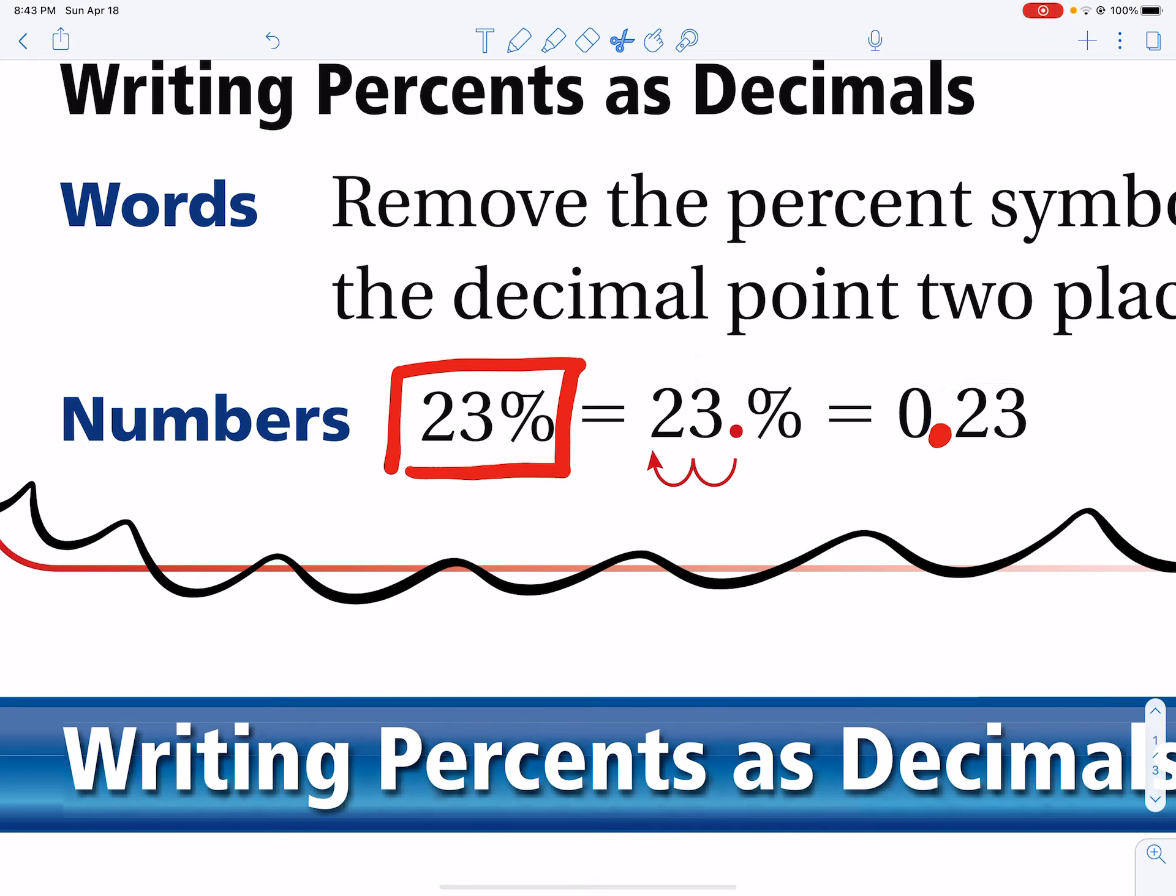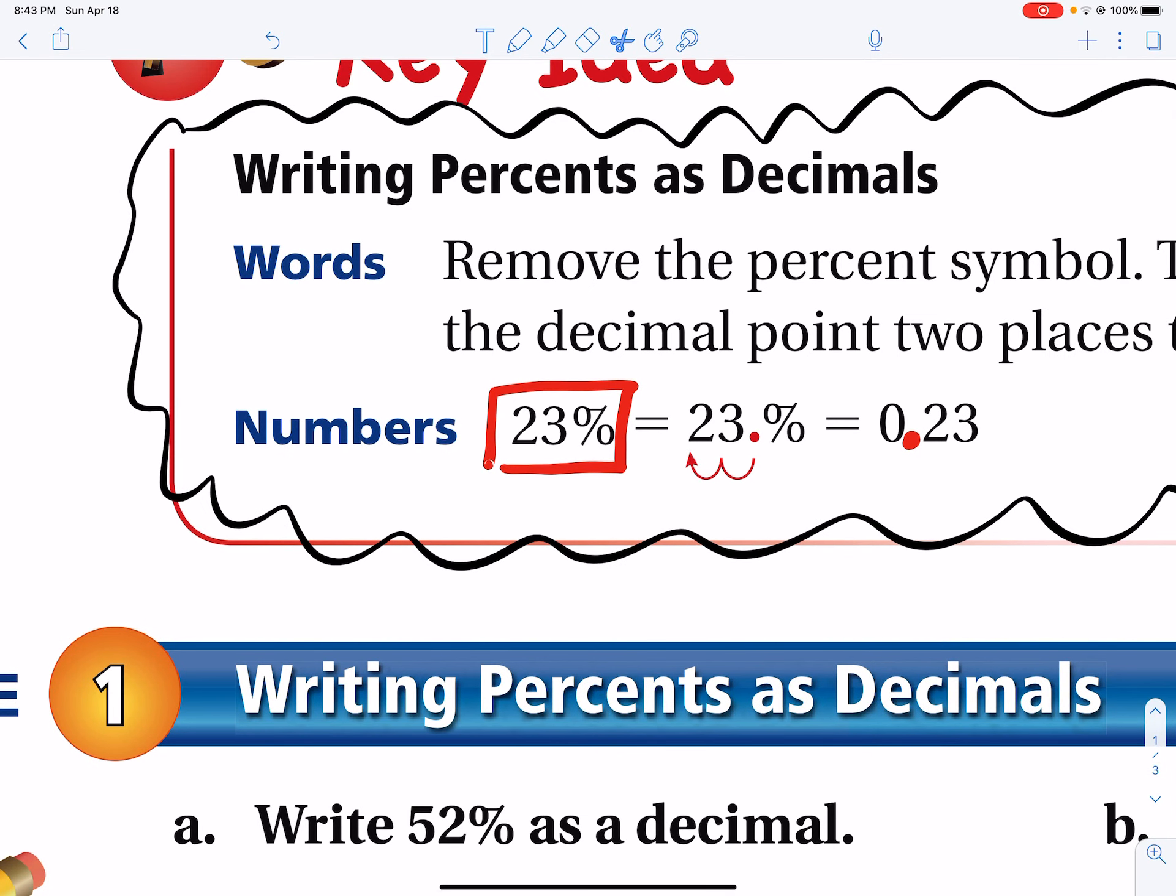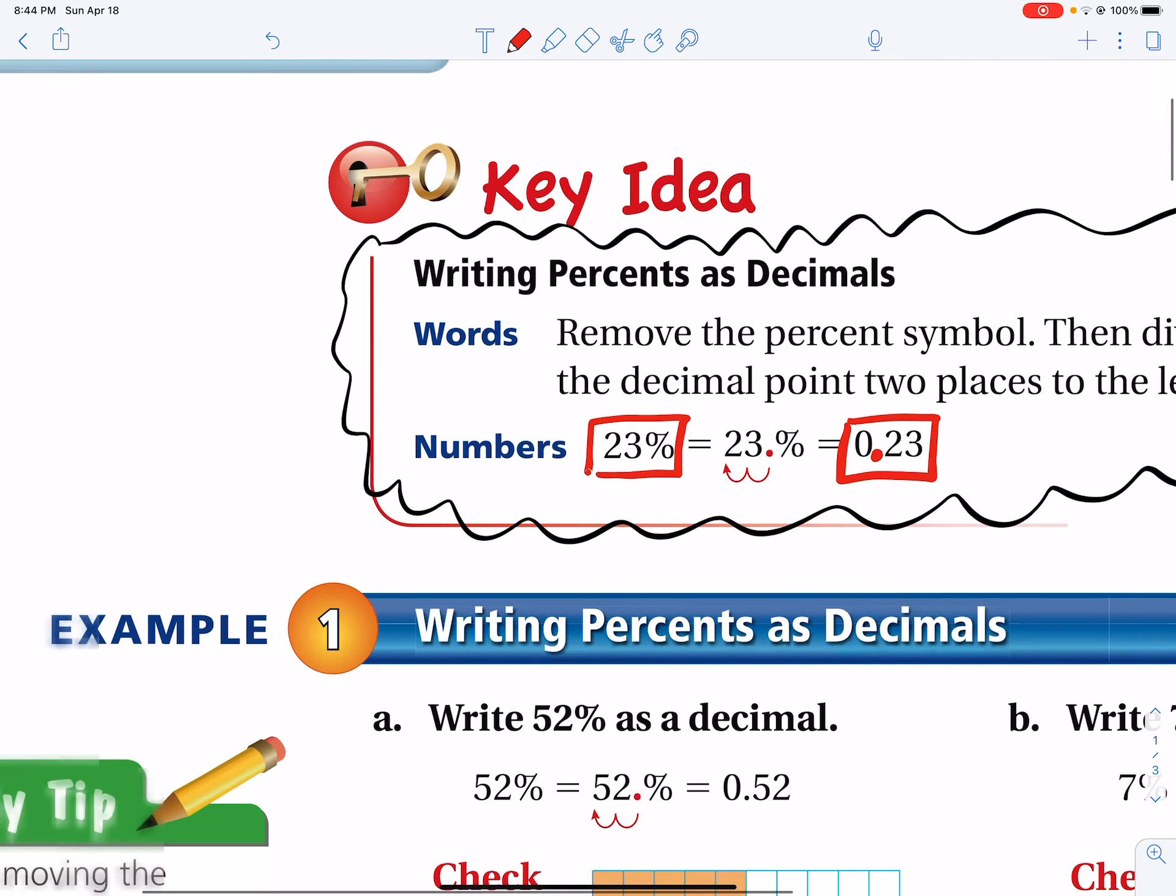Of course, you always put a zero to the left of the decimal if there is no other number there so that you don't think you're looking at 23. Putting a zero there lets you know that it's 0.23 or 23 hundredths. So from 23 percent as a decimal, that's how you do it. Move the decimal to the left.